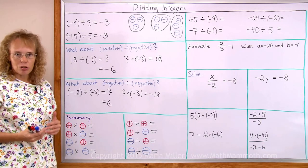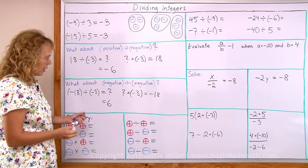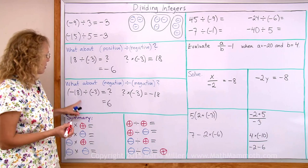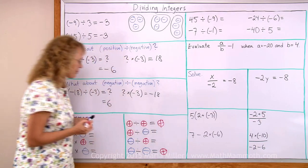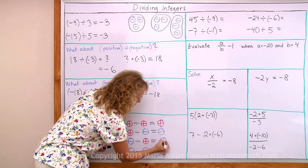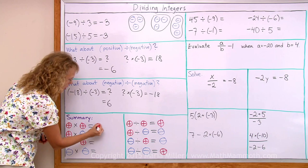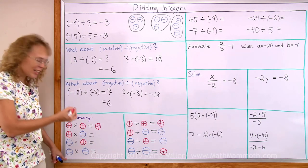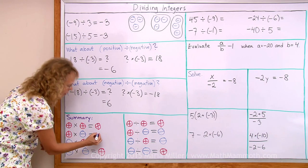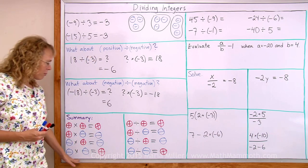Now let's summarize all these. Here is the table for multiplication and here for division. Negative divided by a negative gives a positive answer. And also positive divided by positive, like 18 divided by 3, gives a positive answer. These two cases — positive divided by negative and negative divided by positive — both gave us a negative answer. As a comparison, the same holds for multiplication: positive times positive is positive, and negative times negative also gives a positive. Whereas negative times a positive, or vice versa, gives a negative answer.